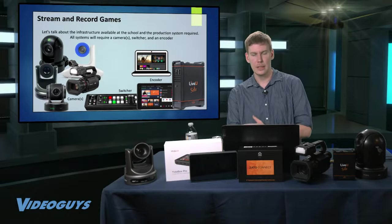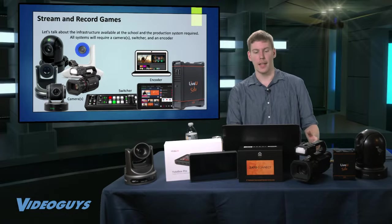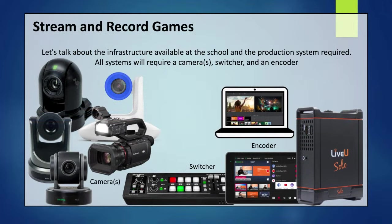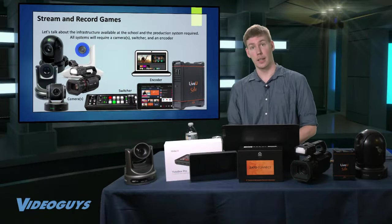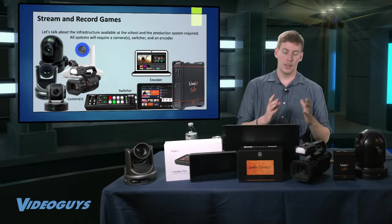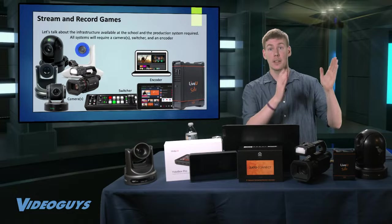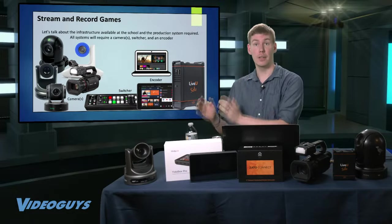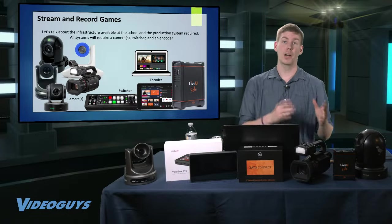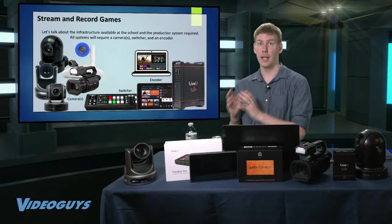Of course, you need to be able to stream and record your games, and lots of schools are upping their production values. You can get things starting out as simple as a camera or a switcher, or get into more complicated things like turnkey systems with multiple cameras on your network. But the key is you need a camera, a switcher, and an encoder. You can get away without a switcher if you only have one camera, but at the very minimum you need a camera and an encoder.